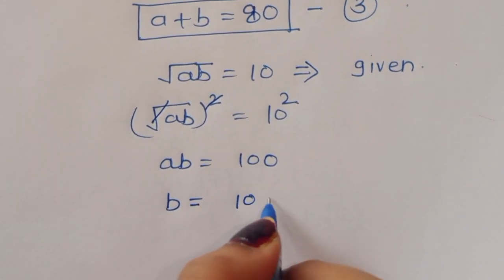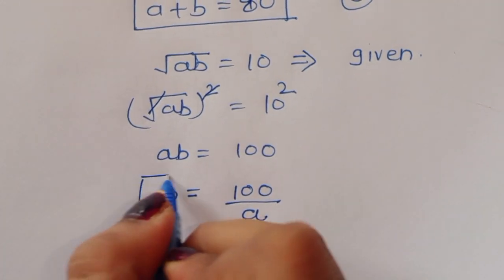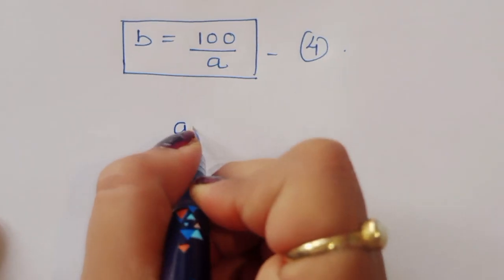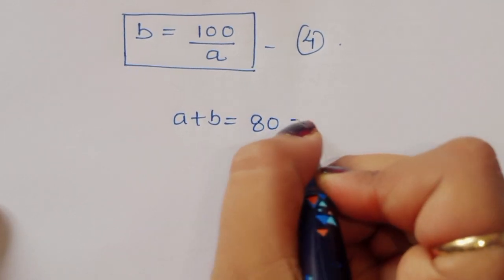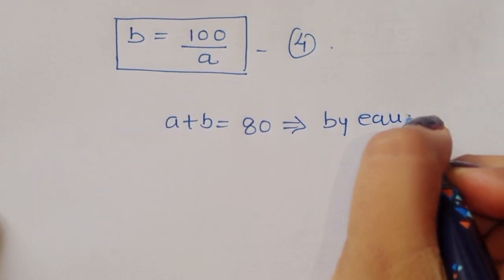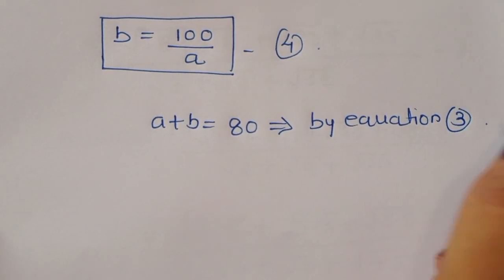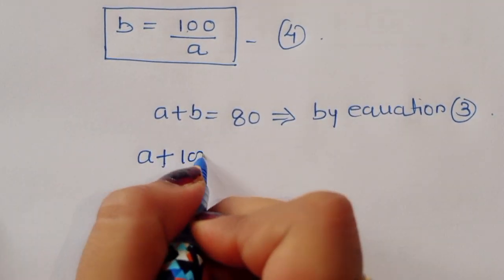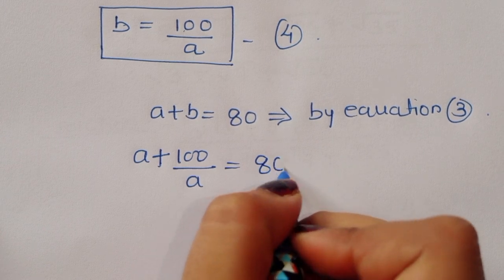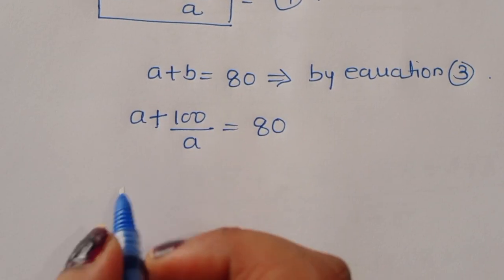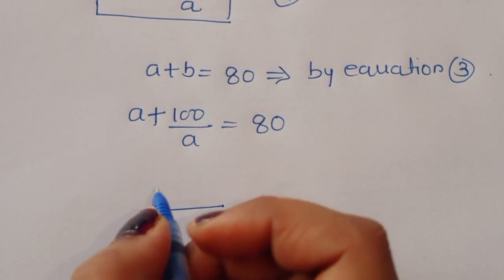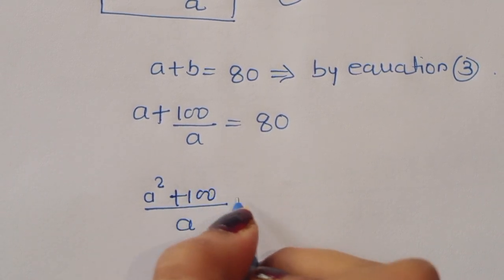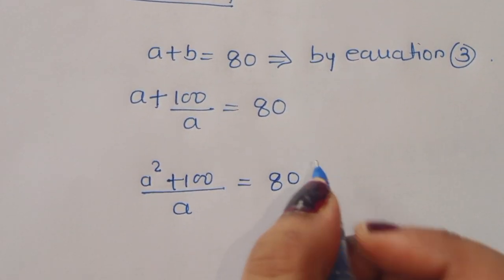So ab equals 100, which means b equals 100 divided by a. This is equation number 4. Now substituting into equation 3: a plus b equals 80. So a plus 100 over a equals 80. Taking the LCM, we get a squared plus 100 equals 80a.